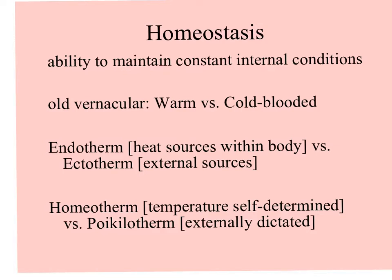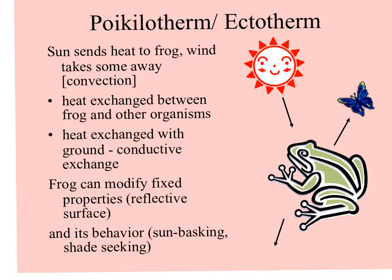We can also call these two categories homeotherms, where temperature is self-determined, and poikilotherms, where temperature is externally dictated. Let's look at a typical poikilotherm or ectotherm like a frog. The sun sends heat to the frog, and the wind blowing across the frog's surface carries some away — that's convection.